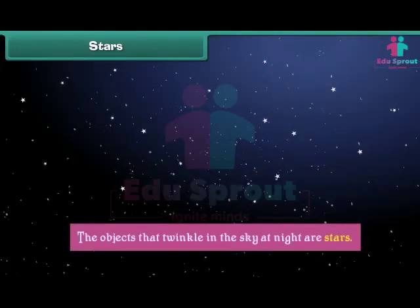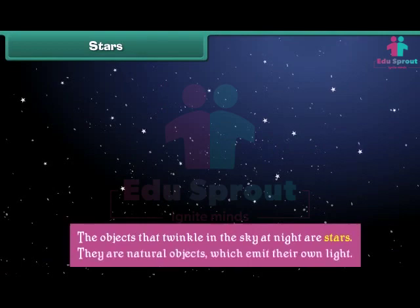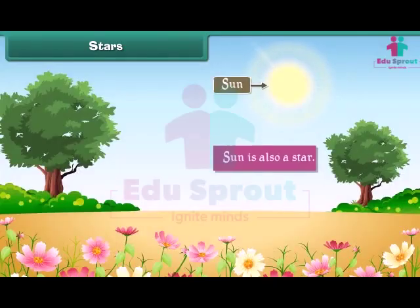The objects that twinkle in the sky at night are stars. They are natural objects which emit their own light. The sun is also a star.